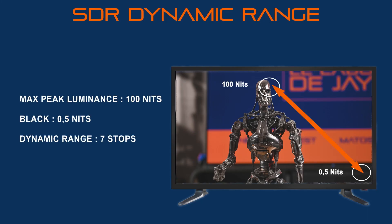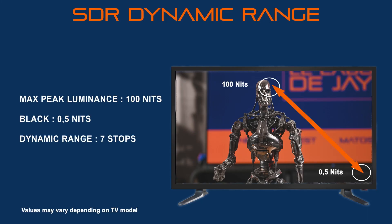To compare, an HDTV — which we call SDR, short for Standard Dynamic Range — has a dynamic range of 7 stops, with a maximum light intensity of 100 nits and a minimum of 0.5 nits. The point of HDR is to give you a larger dynamic range and get closer to what the human eye can perceive. A TV is said to be HDR when it displays at least 10 stops.